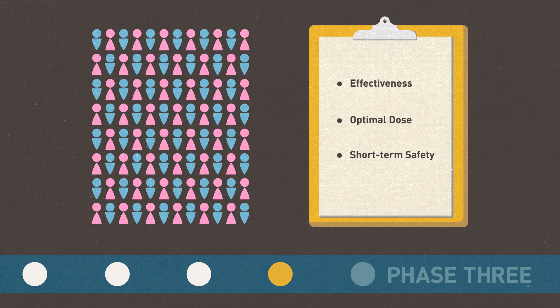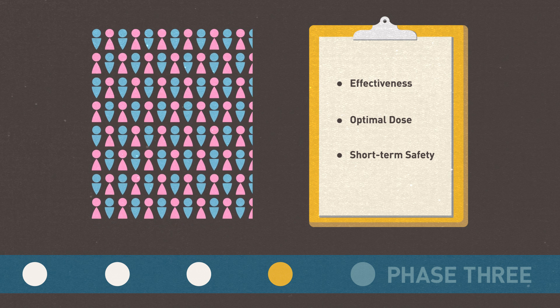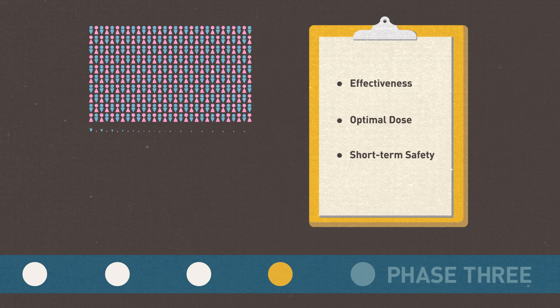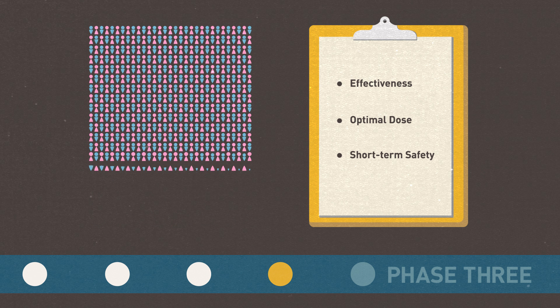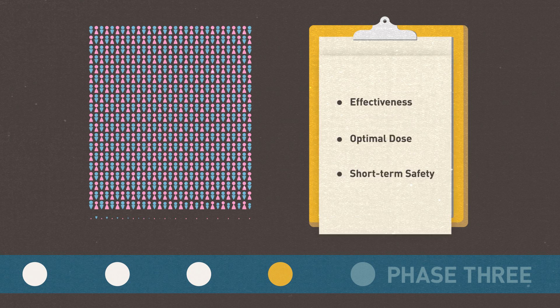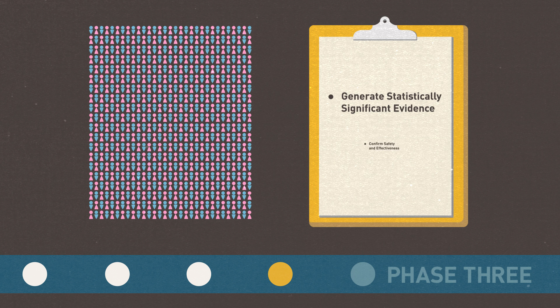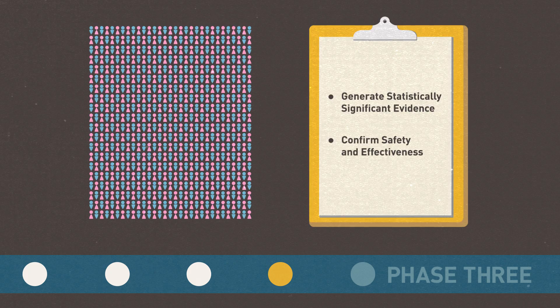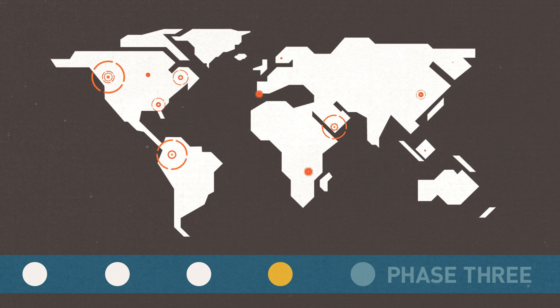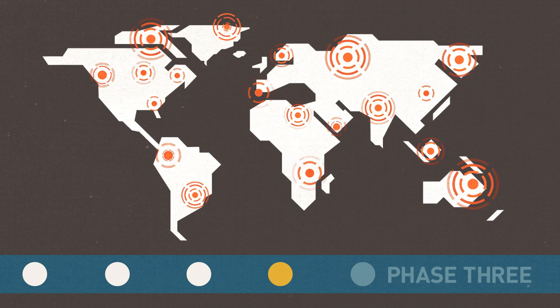In phase three, the drug is given to a larger, more diverse patient population, often involving between 1,000 and 5,000 patients, but sometimes many more thousands, to generate statistically significant evidence and confirm its safety and effectiveness. These are the longest studies and usually take place in multiple sites around the world.